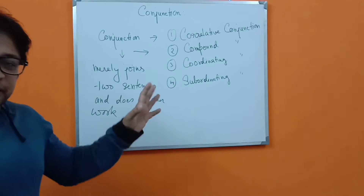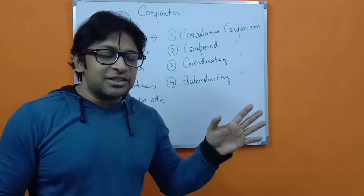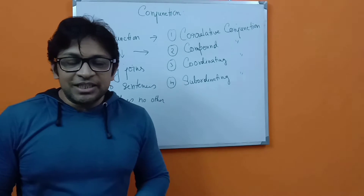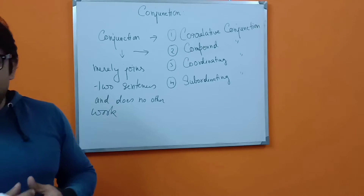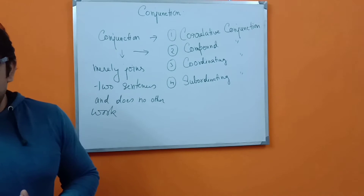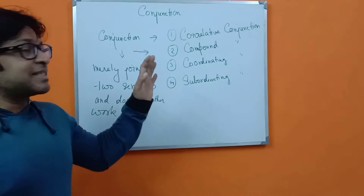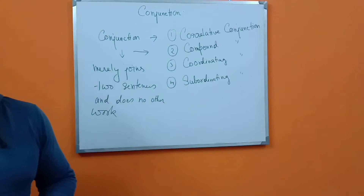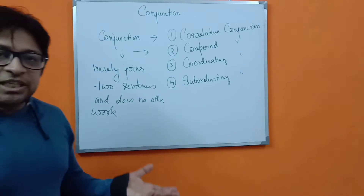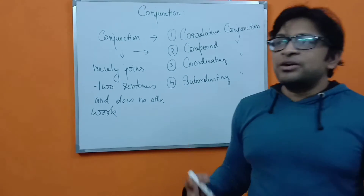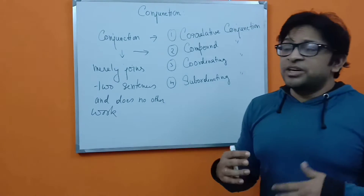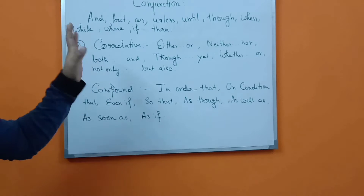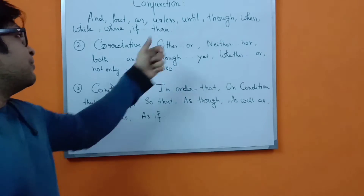Coordinating conjunctions and subordinating conjunctions are a little different. Within coordinating conjunctions there are four kinds: cumulative, adversative, elative, and disjunctive. Subordinating conjunctions can be divided into six different ways: time, cause and reason, purpose, result, conditions, and concession. You have to be very careful about how these differ from one another. Common simple conjunctions to remember include: and, but, as, unless, until, though, when, while, where, if.